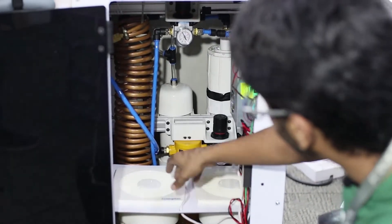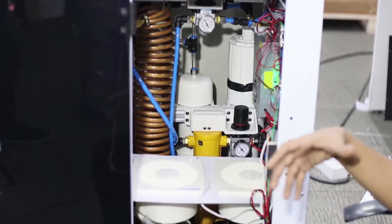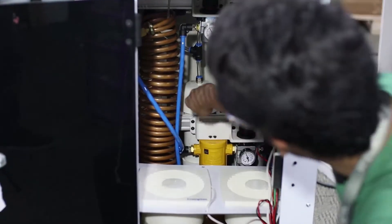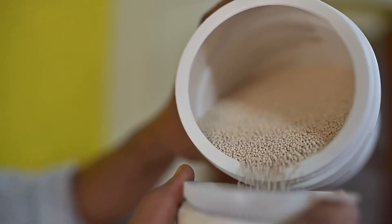After the moisture separator which removes all the moisture, we have the pressure regulator which is regulating the pressure going into the system. Then at the back we have these two sieves. This is where we have the molecular sieves, the zeolite.